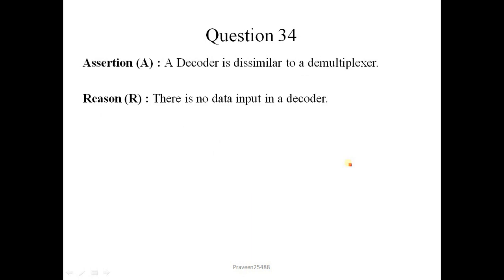Question number 34. Assertion is a decoder is dissimilar to a demultiplexer. Here we show the diagram. There is two to four decoder. There are two inputs, four outputs controlled by this enable line. And in demultiplexer there is one input line and two select lines which will give four outputs. So decoder is dissimilar to demultiplexer. This is correct. There is no data input in a decoder. As you can see there are two input lines, so this statement is not correct. So correct option is 3.